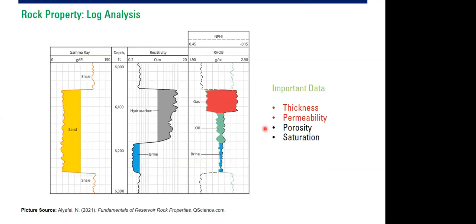This is a typical example of log analysis. The first log is gamma ray, which is used to distinguish lithology — for example, shale has high API gamma ray and sand has lower gamma ray readings. Starting from the left column, we can identify the reservoir section or sand section, showing the gross rock from one depth to another.